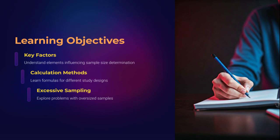Let's clarify what you'll walk away with. First, you will understand the critical factors that govern sample size, such as effect size, statistical power, and variability. Second, we'll walk through essential formulas for calculating sample size across different study types, from clinical trials to observational and qualitative research. And finally, you'll see why oversampling, though tempting, can be counterproductive — whether you're planning your first study or refining a grant proposal.